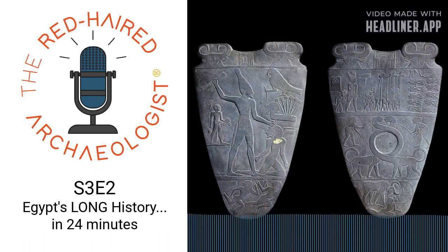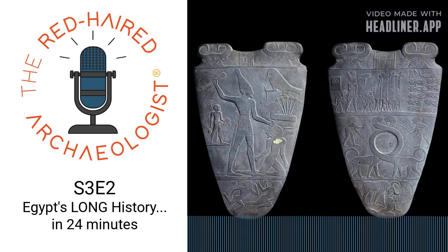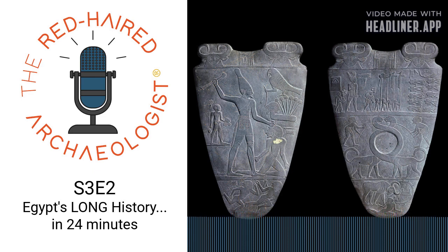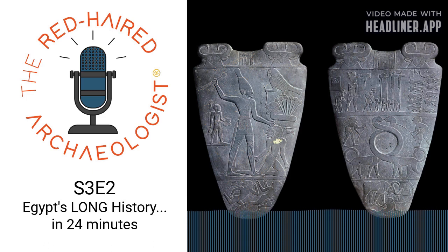For ancient Egypt, upper and lower doesn't have anything to do with north and south. The name actually derives from the flow of the Nile River. The Nile is sort of the opposite of the Mississippi in that it flows north. It has two sources: Lake Victoria, in Tanzania, Uganda, and Kenya, and Lake Tana in Ethiopia — the Blue Nile and the White Nile — which come together and flow north into the Mediterranean. That flow was so essential to the people living there that it drove the way they named the regions, which is why the north is lower and the south is upper.